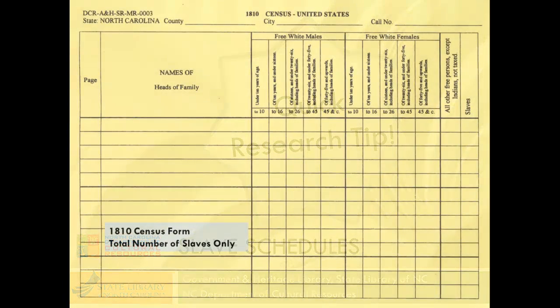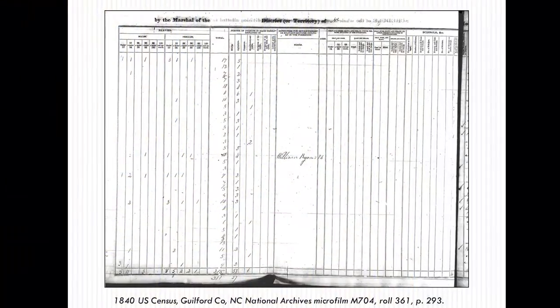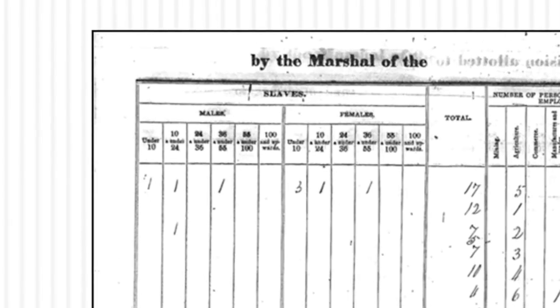Slaves were enumerated on all federal censuses from 1790 through 1860, but not by name. The 1790, 1800, and 1810 population schedules indicate only the total number of slaves, while the 1820, 1830, and 1840 censuses record slaves by sex and age range. For 1850 and 1860, there were separate slave schedules. These schedules list the name of the owner and the sex, age, and color — either black or mulatto — for each slave.